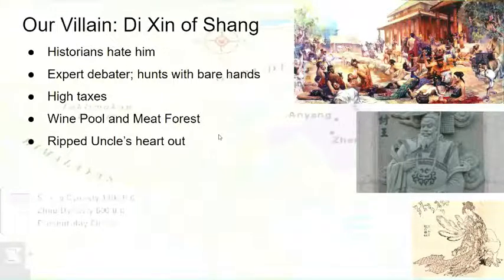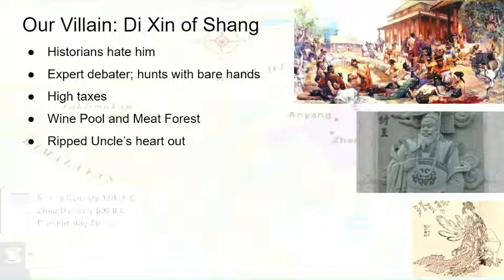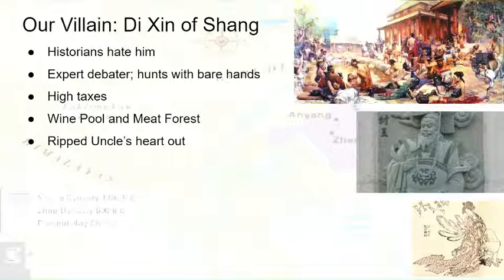Let's talk more about his bad deeds. He ripped his uncle's heart out. Di Xin's family objected to a lot of his decisions, and one time his uncle objected. So in response Di Xin said, 'I wonder if your heart is different from other people's hearts' — and then he literally ripped his uncle's heart out to check. Historians have not answered the question of whether his uncle's heart was different, because the important part is he literally killed his uncle. He's a kinslayer.